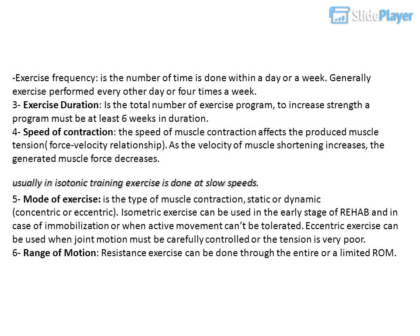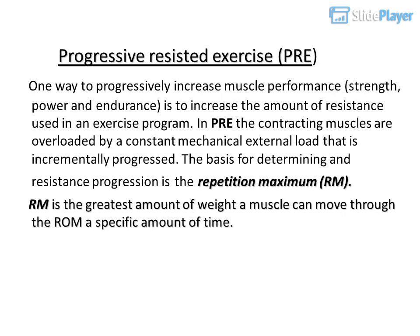Progressive Resisted Exercise (PRE): one way to progressively increase muscle performance — strength, power, and endurance — is to increase the amount of resistance used in an exercise program. In PRE, the contracting muscles are overloaded by a constant mechanical external load that is incrementally progressed. The basis for determining resistance progression is the Repetition Maximum (RM). RM is the greatest amount of weight a muscle can move through the ROM a specific number of times.